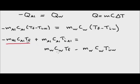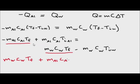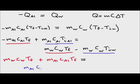Now I want to combine the terms which have the final temperature. So I'll have the mass of the water multiplied by the specific heat of the water multiplied by the final temperature, plus the mass of the aluminum multiplied by the specific heat of the aluminum multiplied by the final temperature. Then I'll combine the starting temperature terms: mass of aluminum times specific heat of aluminum times starting temperature of aluminum, plus mass of water times specific heat of water times starting temperature of water.